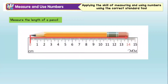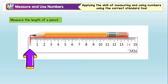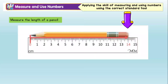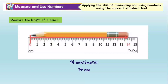Let's try this activity: measure the length of a pencil. Ukur panjang sebatang pensel. Make sure the end part of the pencil is placed at the zero mark of the ruler. Pastikan hujung pensel diletakkan pada tanda sifar. The other end of the pencil shows the length. So the length of the pencil is 14 cm.